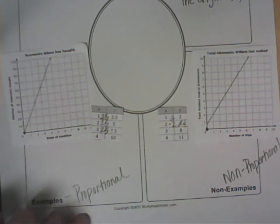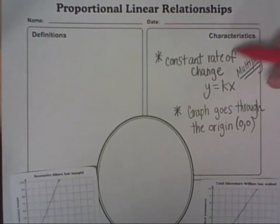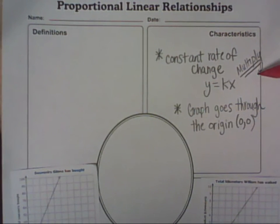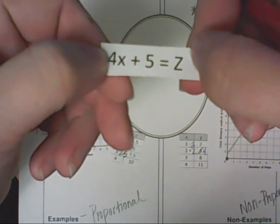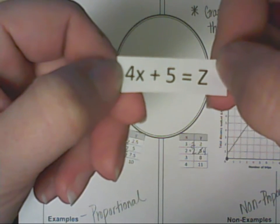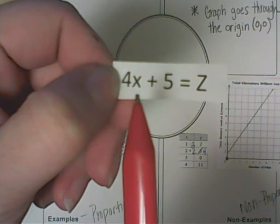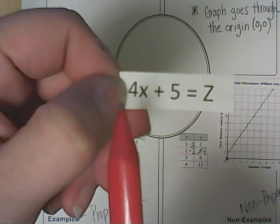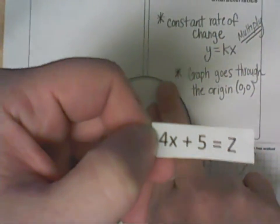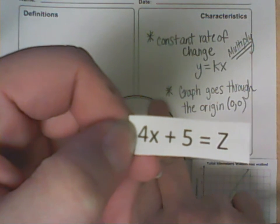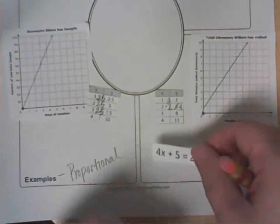Let's go ahead and take a look at the equation. Going back to our characteristics, y equals kx means we should see only multiplication. This equation says 4x plus 5. I see multiplication — 4 beside x means multiply — but I also see adding 5. Since our characteristic says we should only see multiplication, this equation is non-proportional.